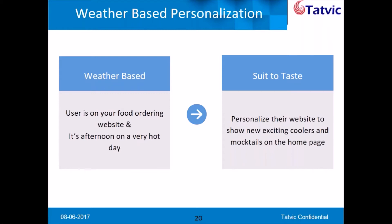This use case is a classic example of hyper-personalization, where you as a business can actually get into the shoes of your users. This particular example is applicable to an e-commerce website, a lead-generating website, or whatever domain you have. Of course, this is related to an external factor of a user, not an internal factor which you can track through your website.